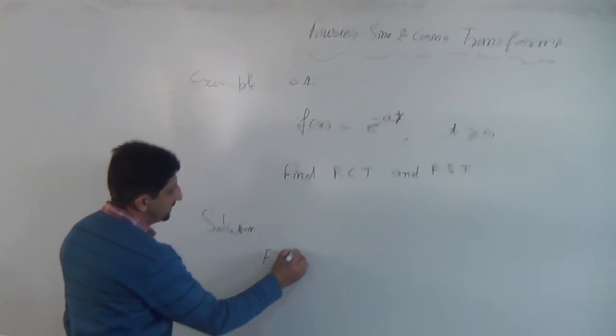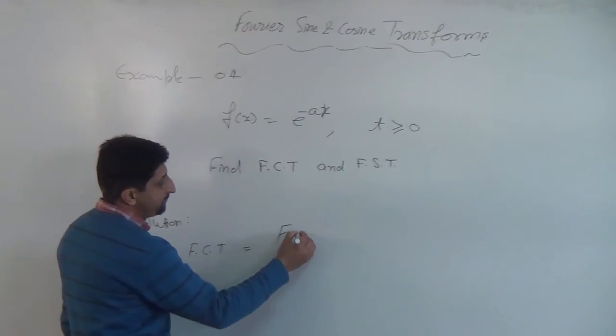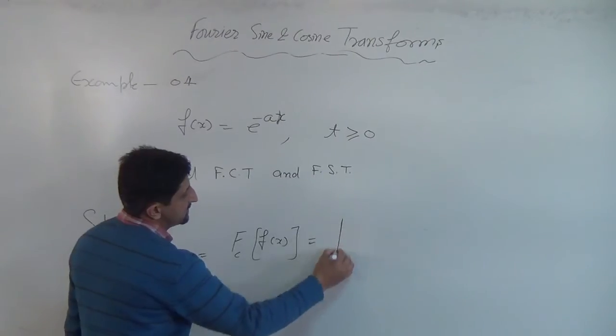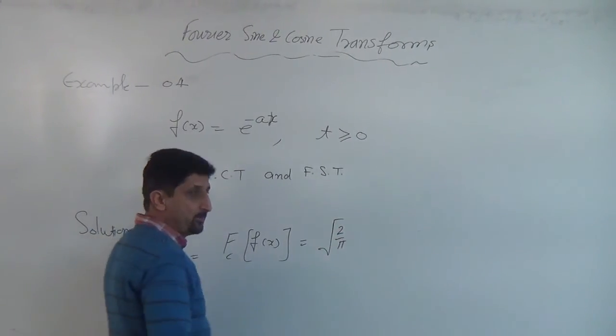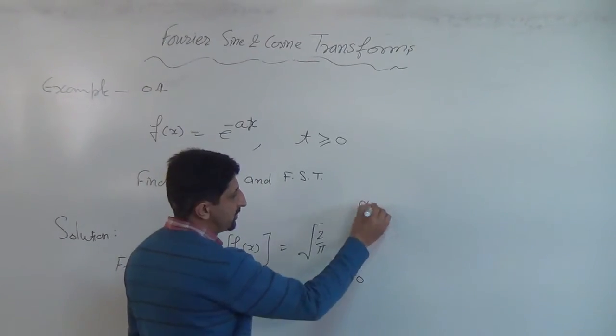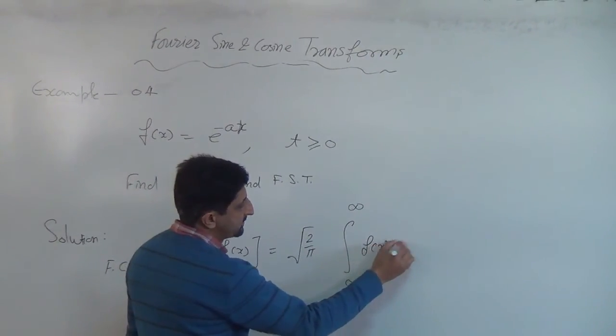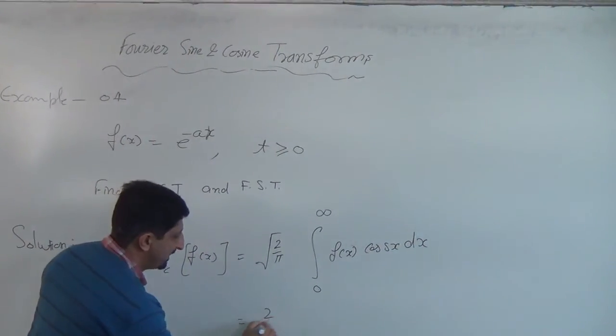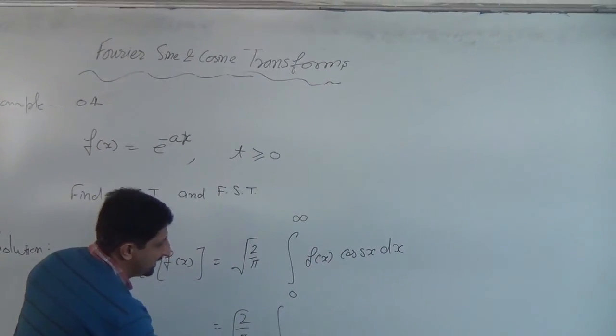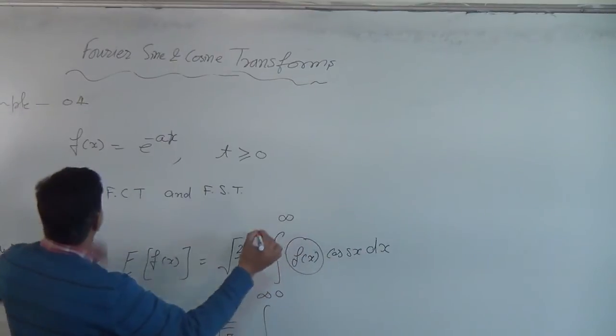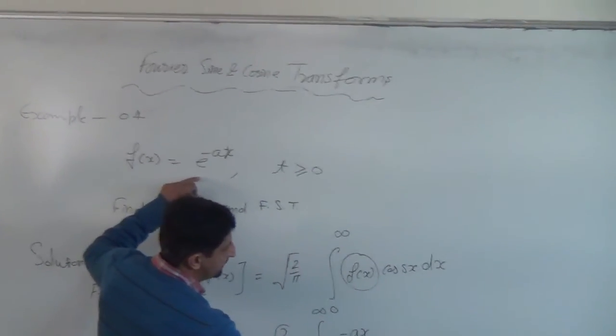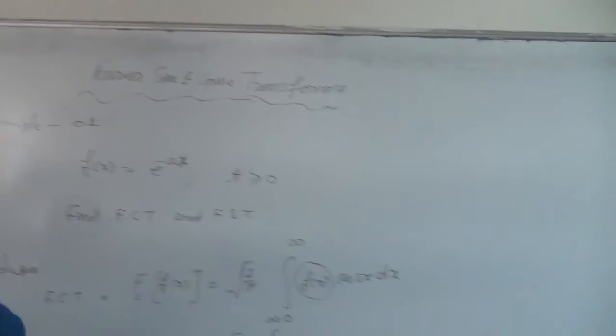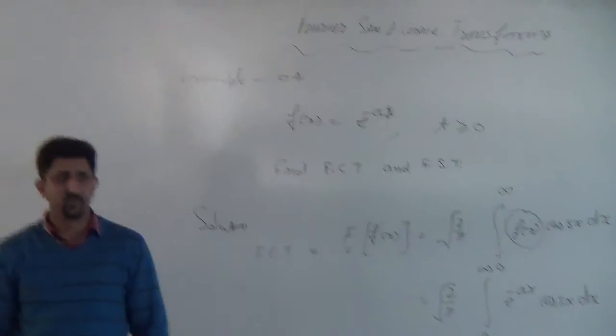Let's go for the solution. Fourier cosine transform, that is F_c of f(x). As per the formula it is 2 upon pi integral from 0 to infinity f(x) cos(sx) dx. So it's very simple. Again it is 0 to infinity. The value of f(x) is given.